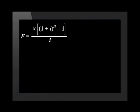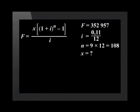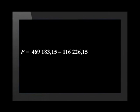Let's use the future value formula. This reads: F equals x double bracket 1 plus i bracket to the power of n minus 1 bracket divided by i. We need to determine x, which is the equal monthly investment. F is the price of a new bus minus the scrap value, which is equal to R352,957.